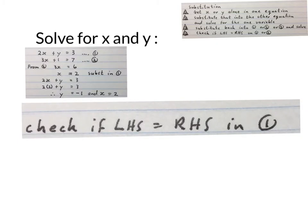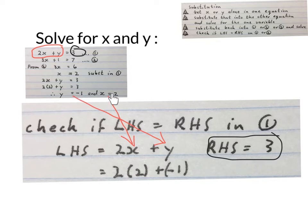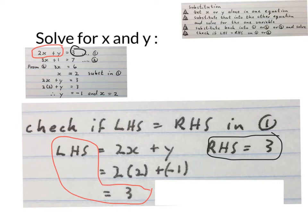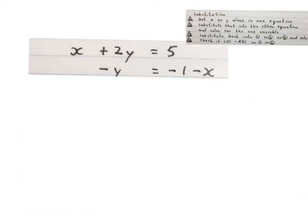Now, like in all maths problems, you can check if what you worked out is right. I'm going to check equation one — write the left hand side and fetch it from that equation, then the right hand side. I replace the Y and X values I worked out into this. The left hand side is also three, so because the left hand side equals the right hand side, I know my calculations — Y equals minus one and X equals two — were right. The check part is just for yourself. The answer is X equals two and Y equals minus one.